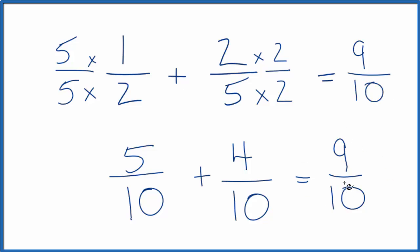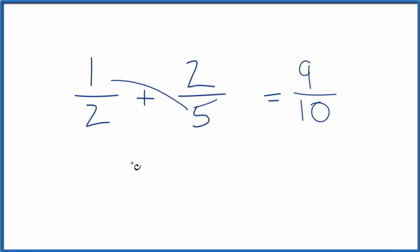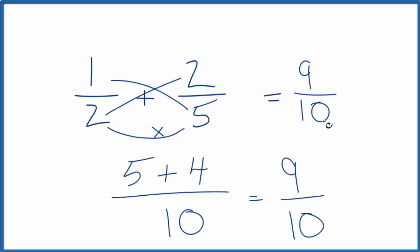Let's quickly check our work. So we take 1 times 5, that'll give us 5, plus 2 times 2, that'll give us 4, and then we take the denominators 5 times 2, that gives us 10. So 5 plus 4 is 9, we bring the 10 across—9 tenths, just like we found before.